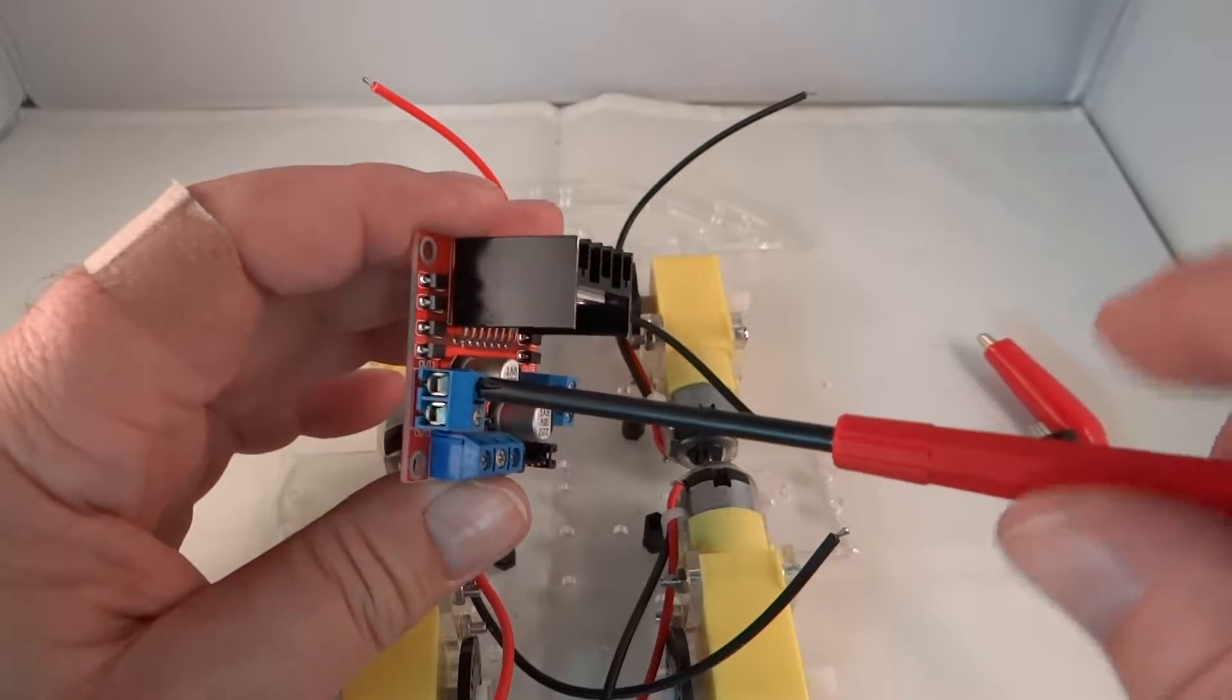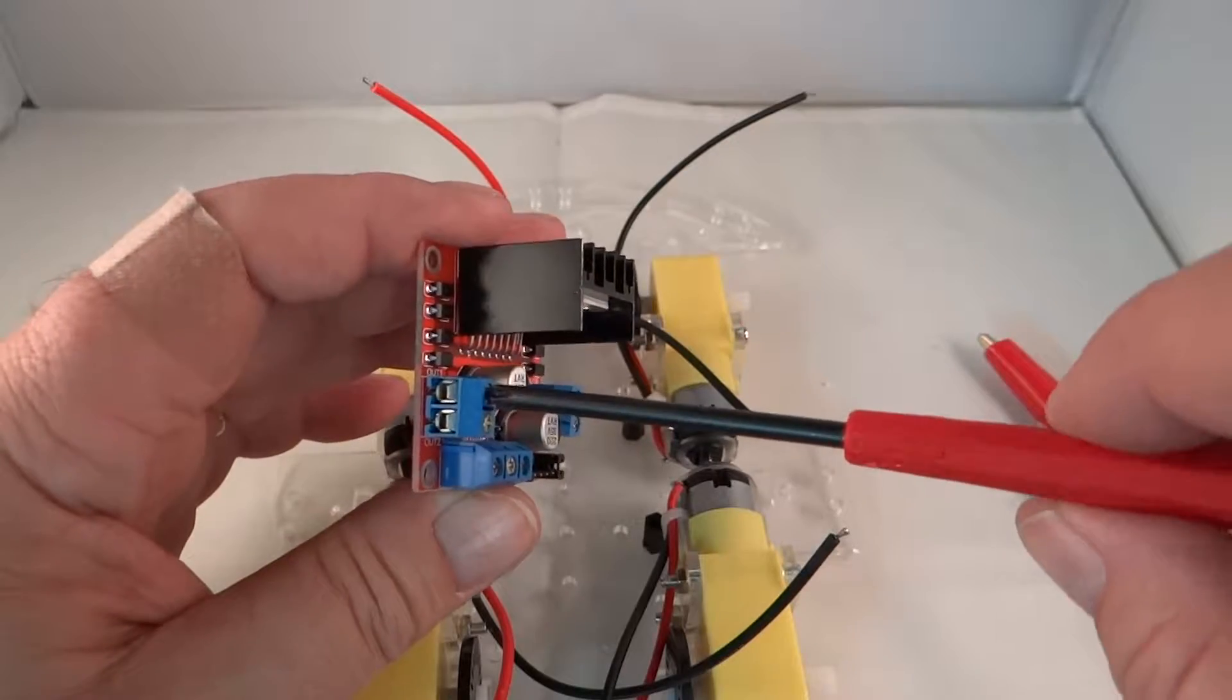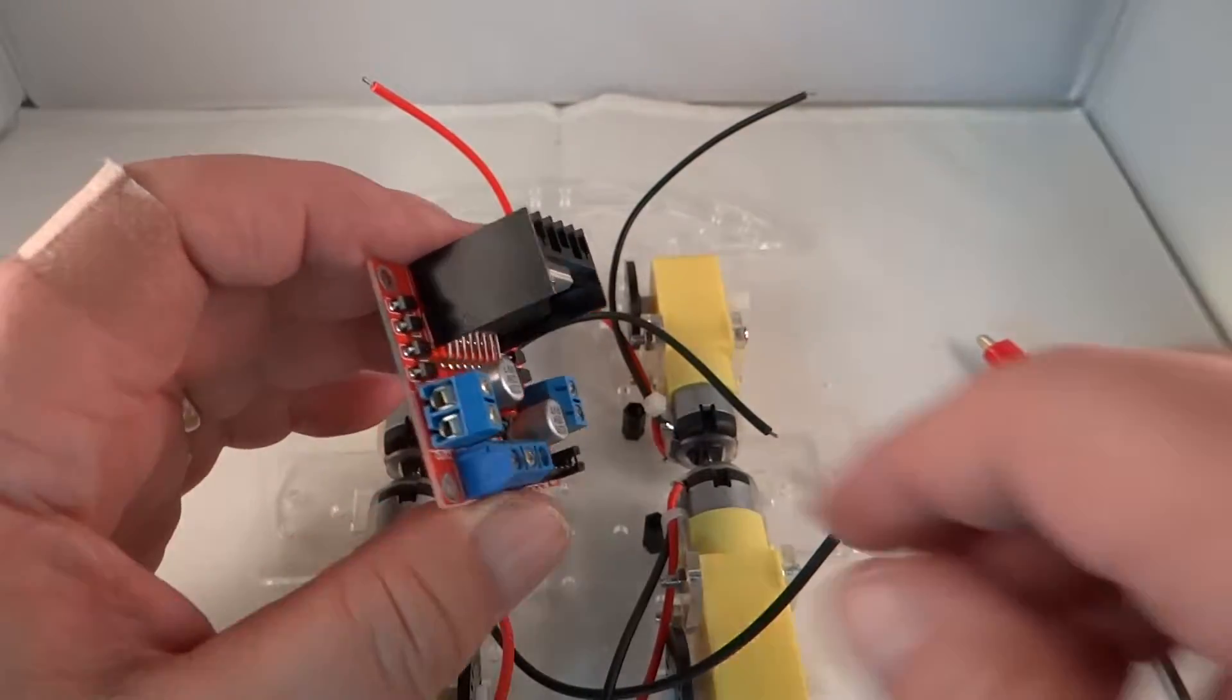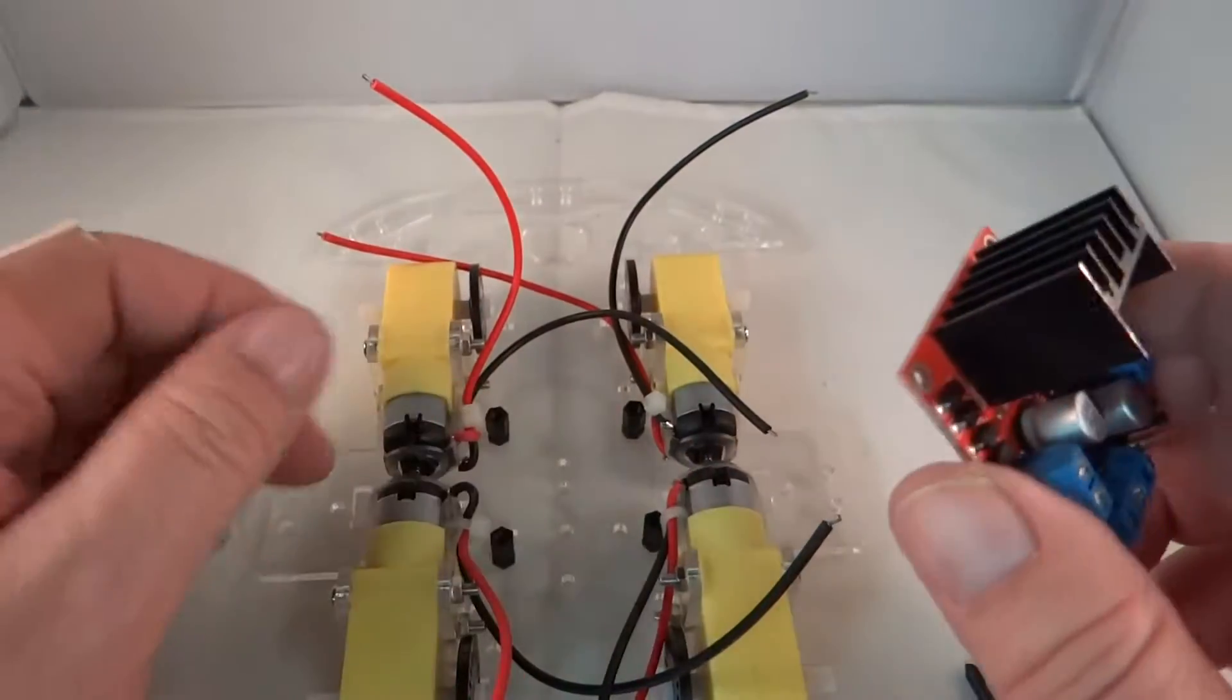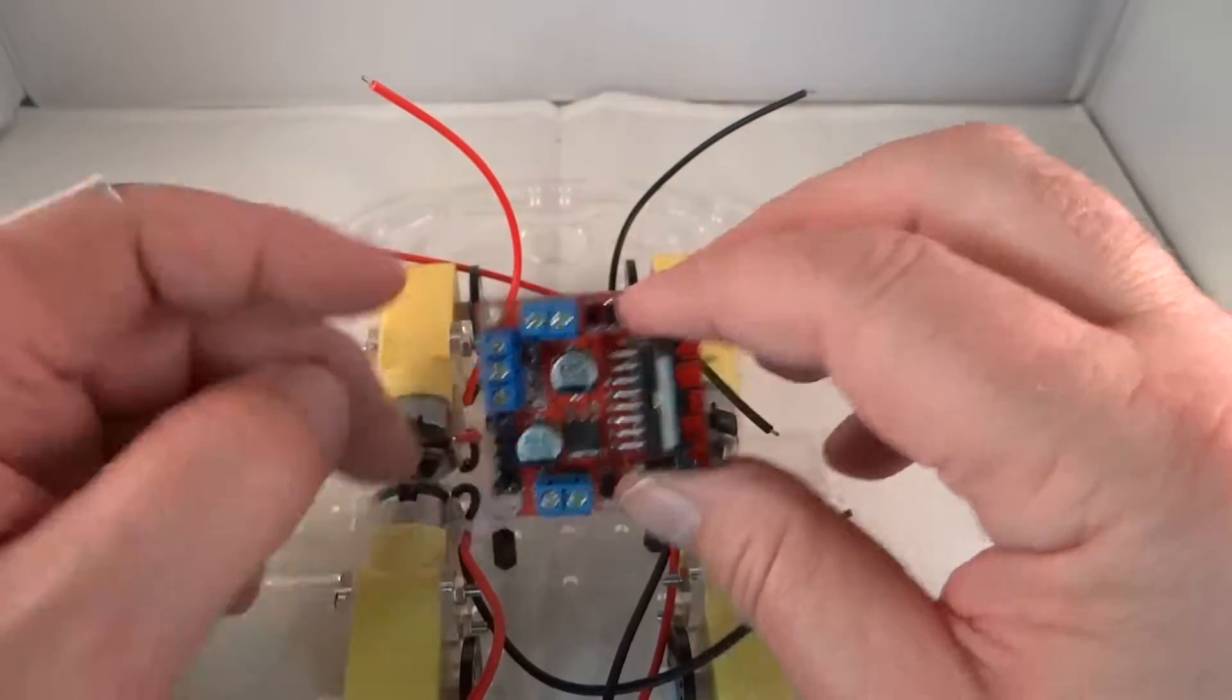Let's loosen these by bringing the screw basically up to the surface here. You don't want to take it all the way out. And now, it goes like this.